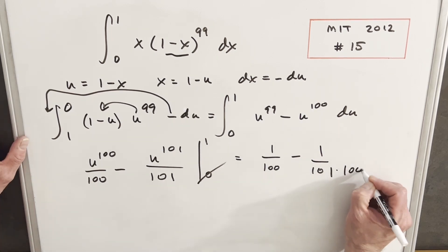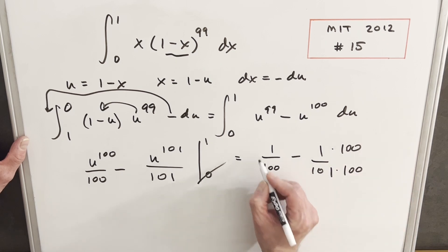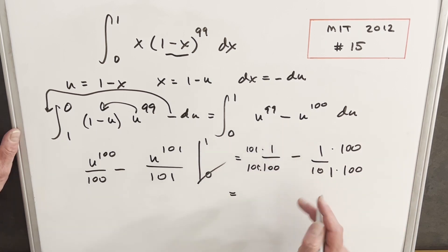And then we can just get a common denominator here, multiplying by 101, multiplying by 100 over here. We'll be subtracting 100 from 101 on top, and we're just going to have 1 over, and then we multiply this thing out. We're going to get 1, 0, 1, 0, 0.